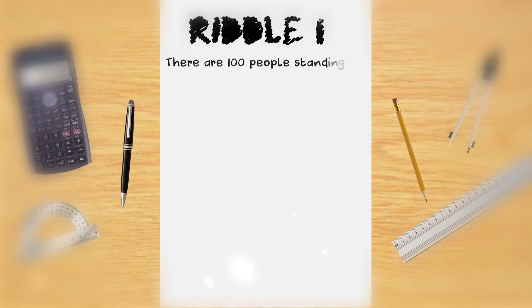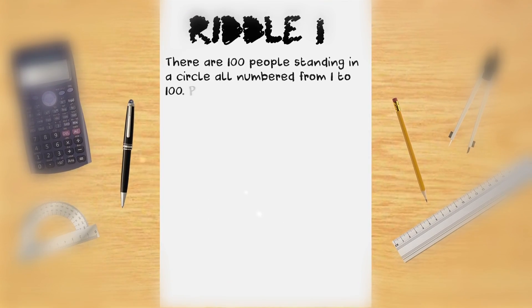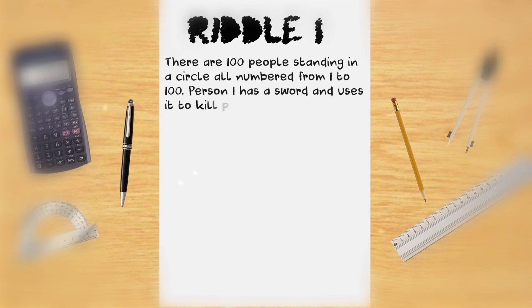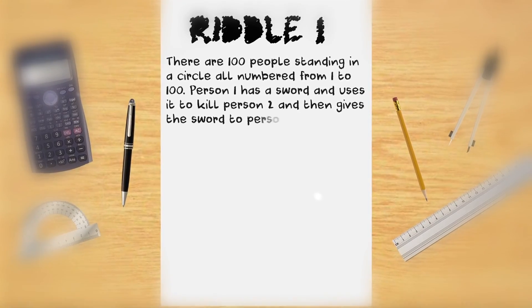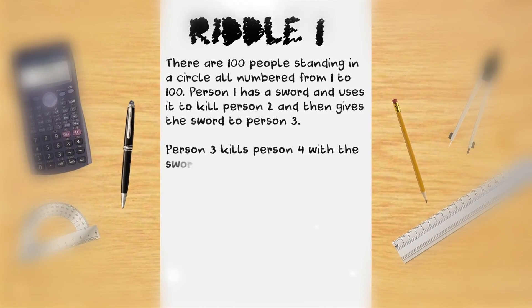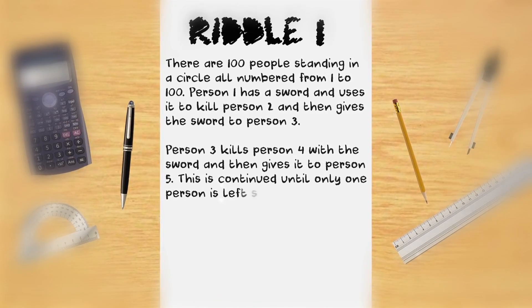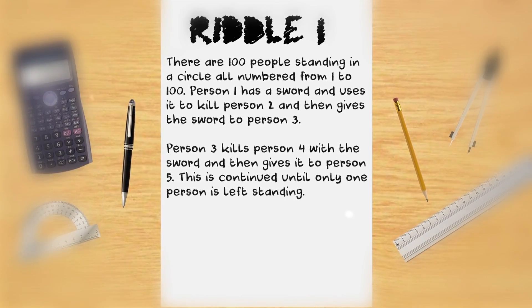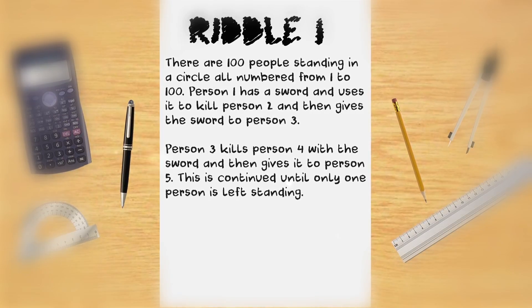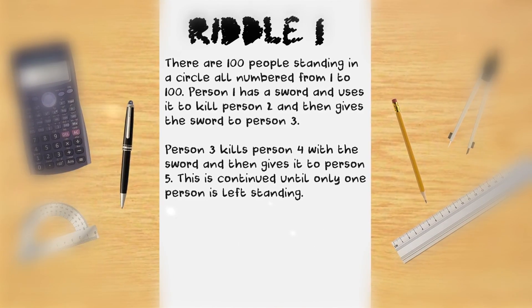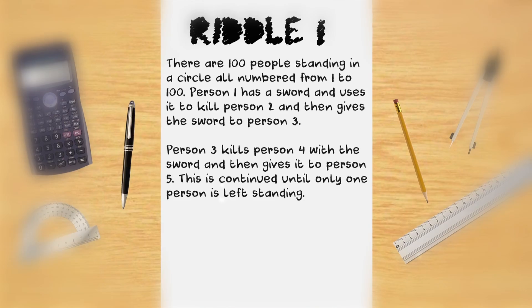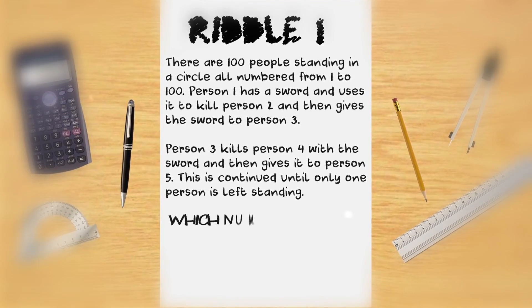There are 100 people standing in a circle all numbered from 1 to 100. Person 1 has a sword and he uses it to kill person number 2 and then gives the sword to person number 3. Person number 3 kills person number 4 with the sword and then gives it to person number 5. This is continued until only one person is left standing. Which number?